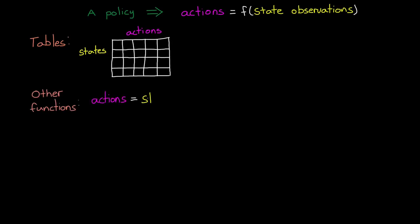Now, last time we ended by explaining how a policy is a function that takes in state observations and outputs actions. And then I briefly introduced the idea of why tables and specifically defined functions aren't a great solution in many cases.